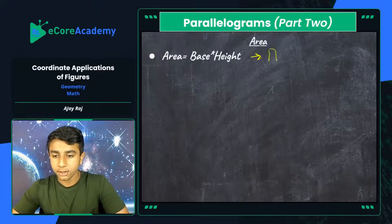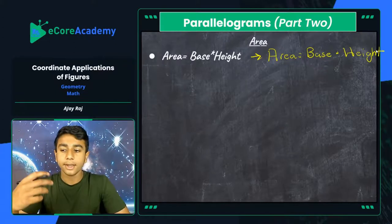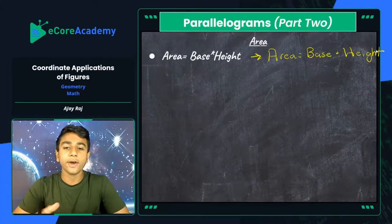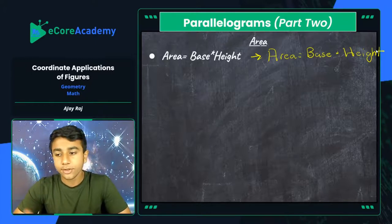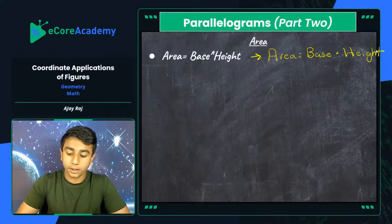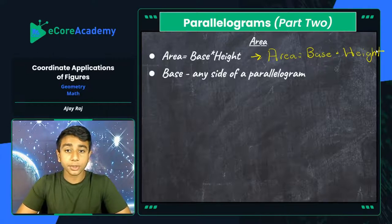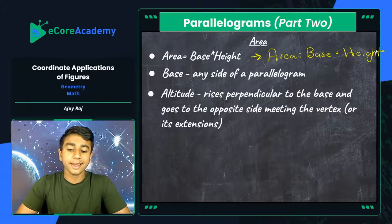The length and width of a rectangle are equivalent to the base and height of a parallelogram — it's basically the same area formula. The base of a parallelogram can be any side you choose. The altitude rises perpendicular to the base, forming a 90-degree angle when it intersects, and extends to the opposite vertex or its extensions.